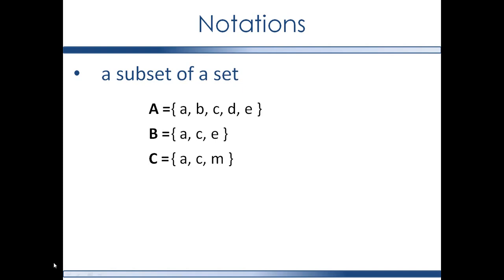A subset of a set. Consider set A, set B, and set C. If each element of a set is also an element of another set, then we can say that the first set is a subset of the latter set. So here, every element of set B is also an element of set A. Set B contains A, C, and E, which are all elements of set A. So set B is a subset of set A, and that is given with this notation. However, not every element of set C is also an element of set A, so set C is not a subset of set A. You notice set C has the element M, which is not found in set A. For that matter, not every element of set A is also an element of set B, so set A is not a subset of set B.